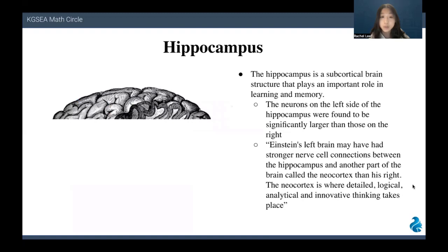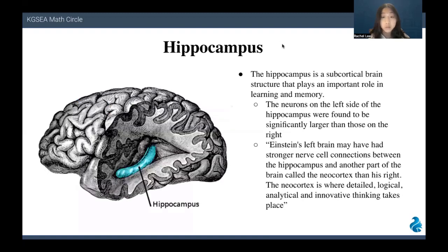To now talk about the hippocampus, which is also the region that Einstein's brain was especially larger in, the hippocampus is a subcortical brain structure that plays an important role in learning and memory. The neurons on the left side of the hippocampus were found to be significantly larger than those on the right side of Einstein's brain, as you can see in this quote.